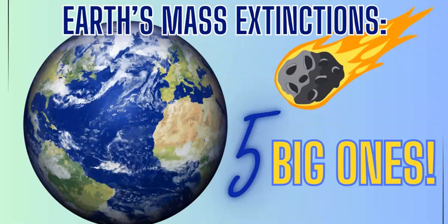This video is looking at the Earth's mass extinctions, in particular the five big mass extinctions. A mass extinction is defined as an eradication of multiple species — a large percentage of species in a very short time. After that, a period of very few species, or the rebound takes a long time. And we're looking at the five big ones in this video.